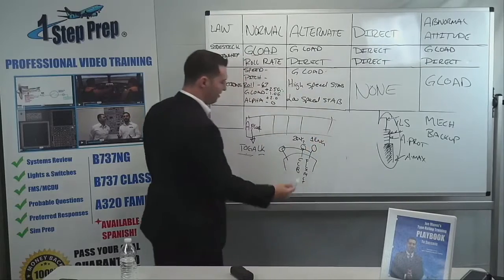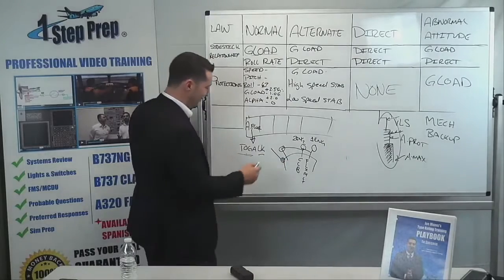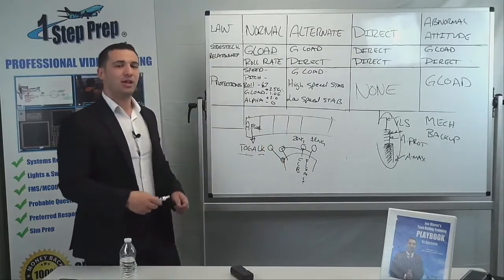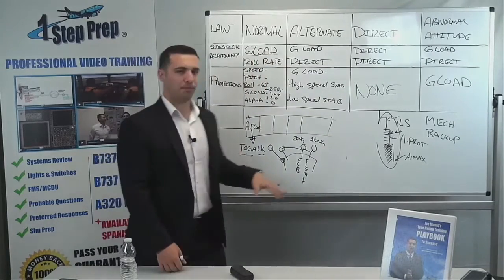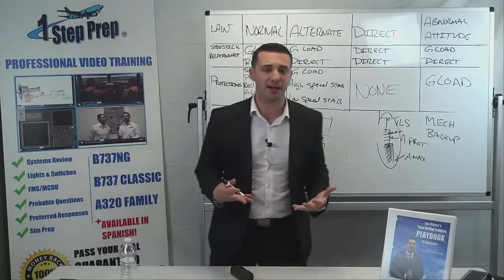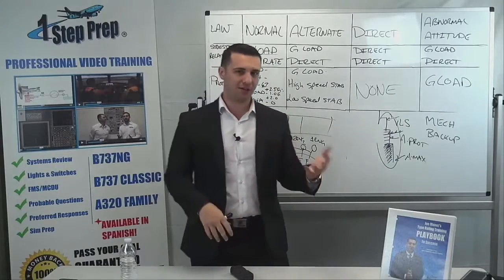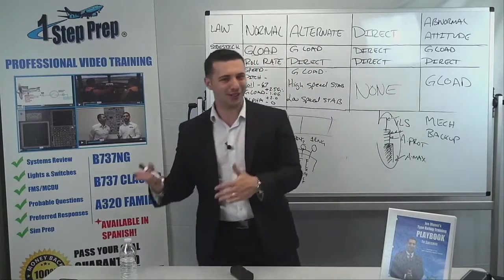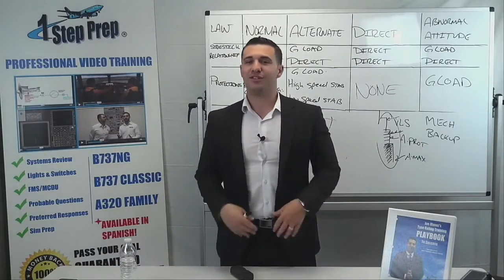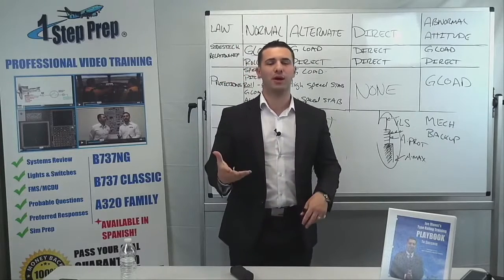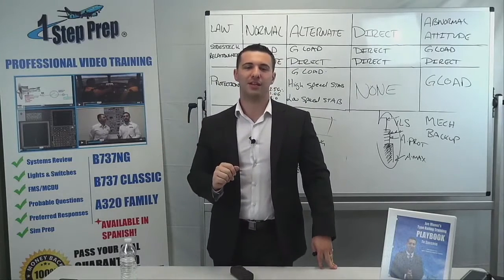Why am I telling you this? Because if you bring the thrust levers back below just above idle — bring them all the way back to idle to the stop — you are effectively turning the auto thrust off. So you could get out of toga lock by retarding the thrust levers all the way back to idle. But why did you get alpha floor and toga lock to begin with? Because of a low energy state or an approaching low energy state. Would you really want to close thrust levers to idle with an impending low energy state? Probably not. So the preferred way to get out of alpha floor and toga lock really is to click the instinctive disconnect push button.